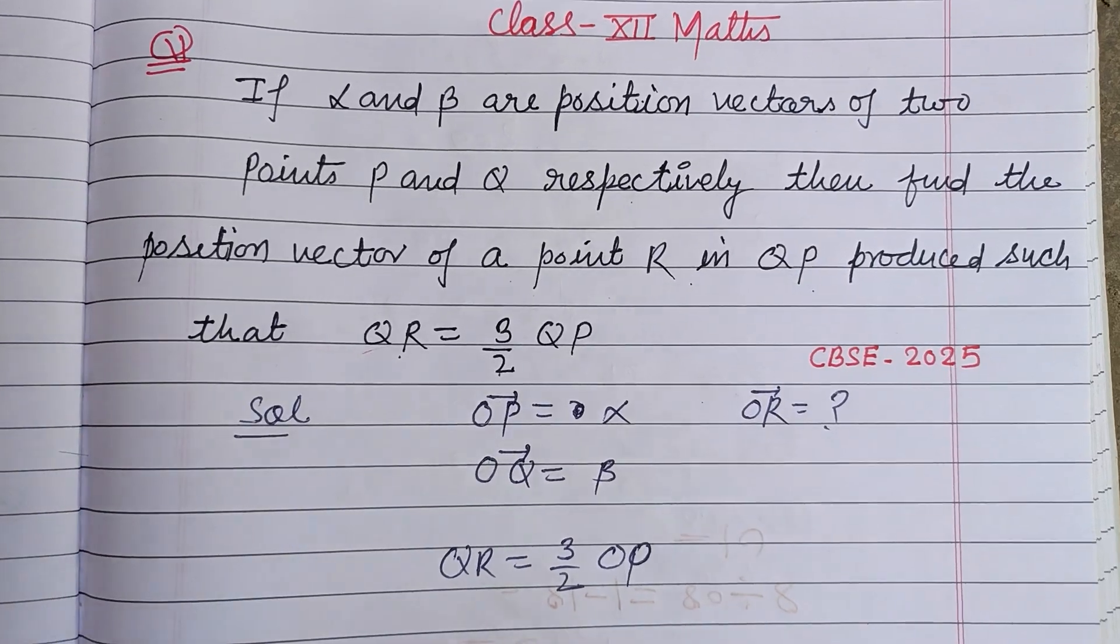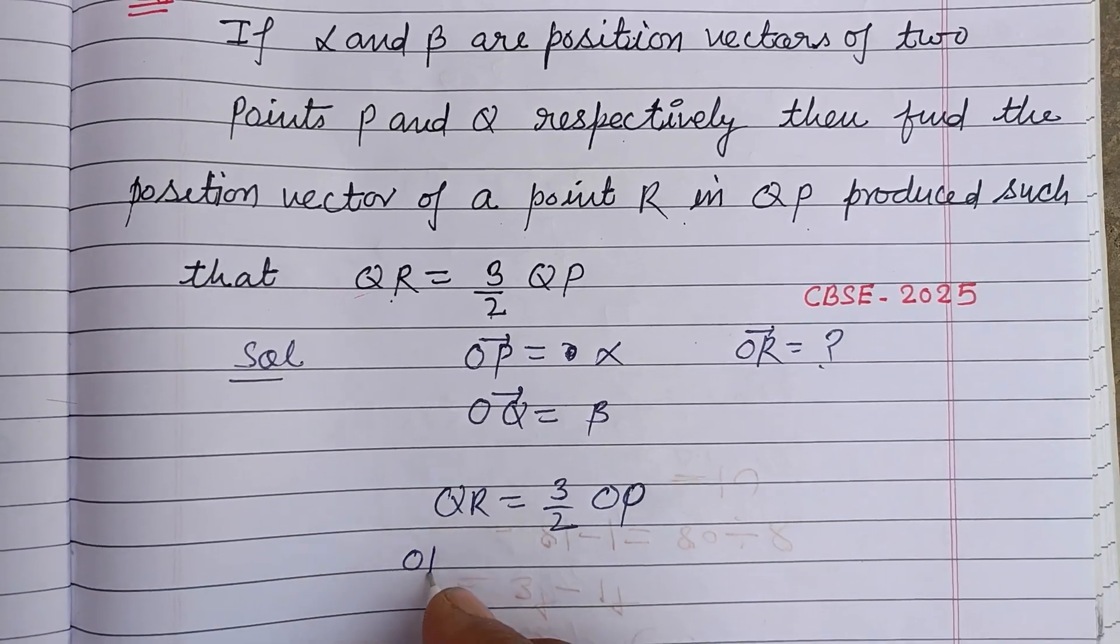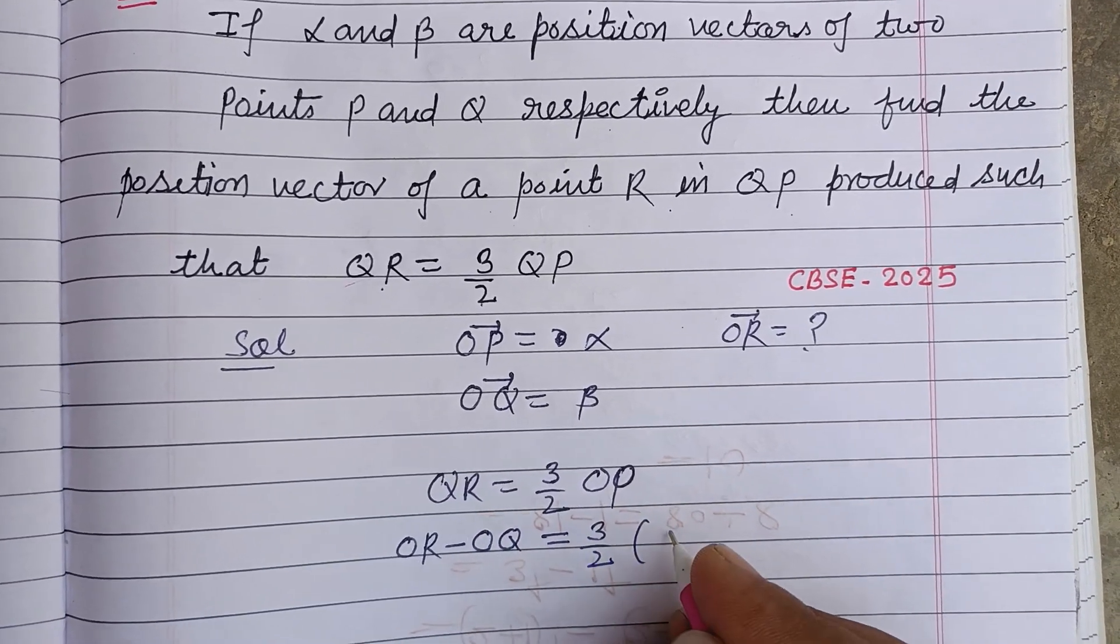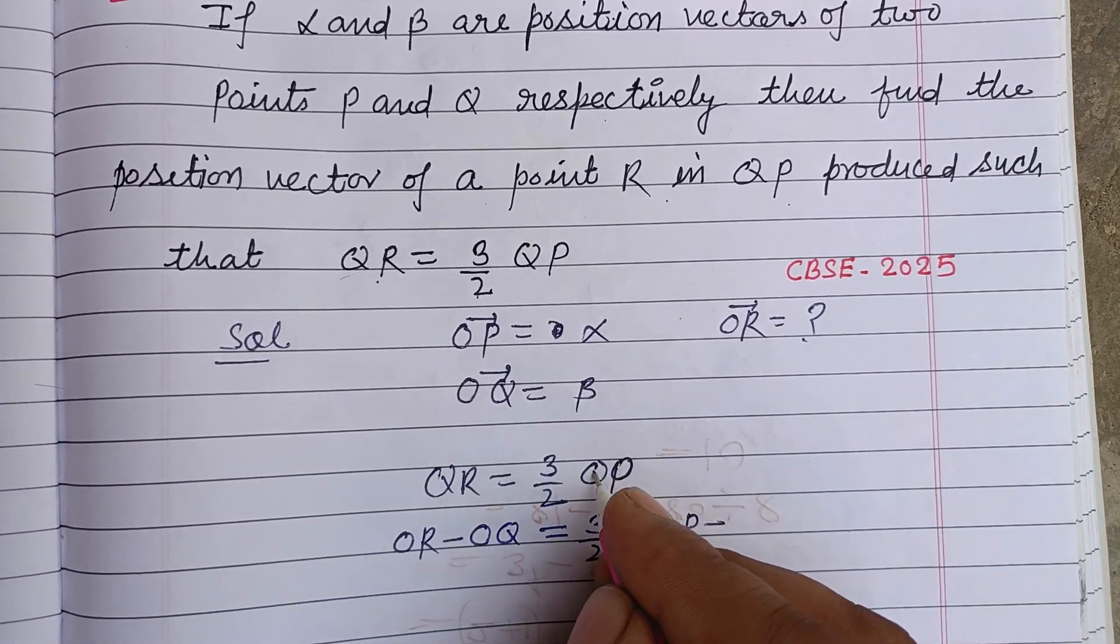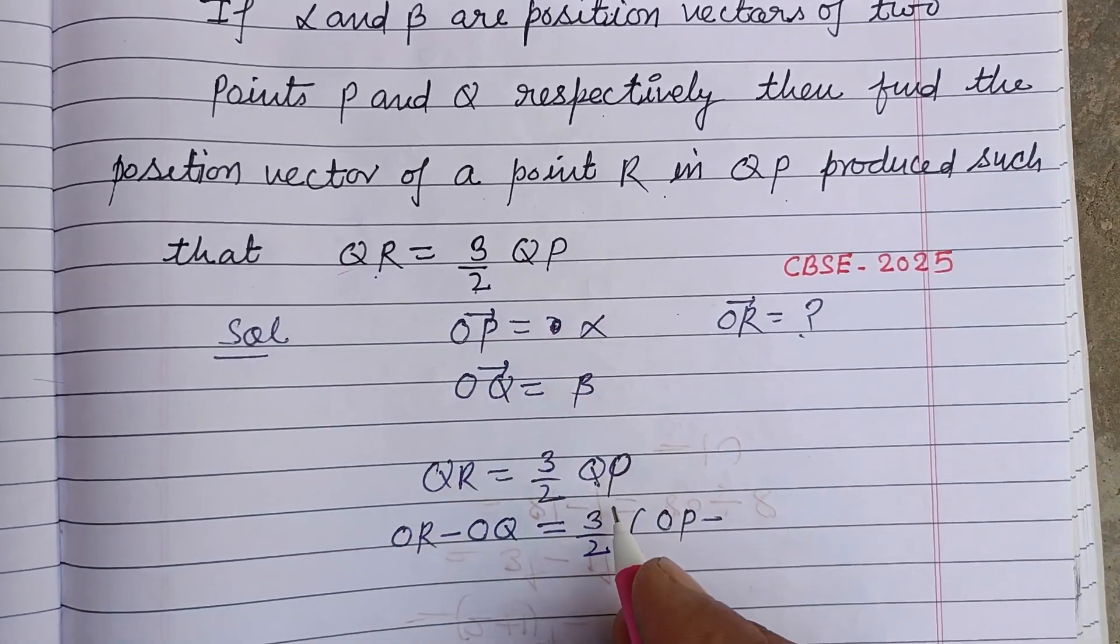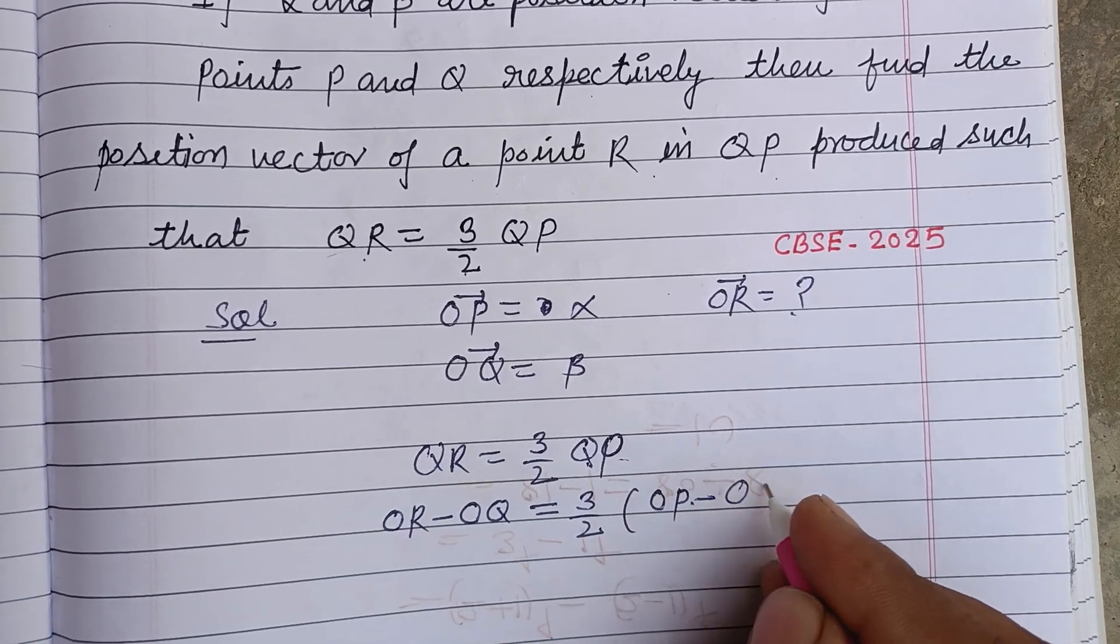So QR, which is OR minus OQ, equals three by two times QP. Now QP is OP minus OQ.